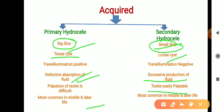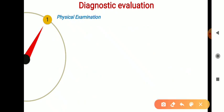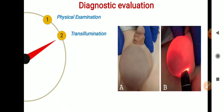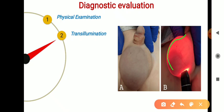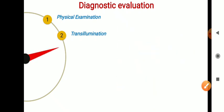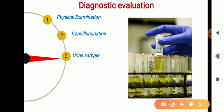For diagnostic evaluation: first is physical examination, where the doctor examines the scrotum — it will be larger or bigger in size, tenderness may be felt by the examiner, and the testis may sometimes not be palpable. Second is transillumination, where bright light is emitted through the scrotum and if fluid is present it reflects the light. Third is a urine sample sent to the lab to detect if the cause of hydrocele is infection or inflammation.